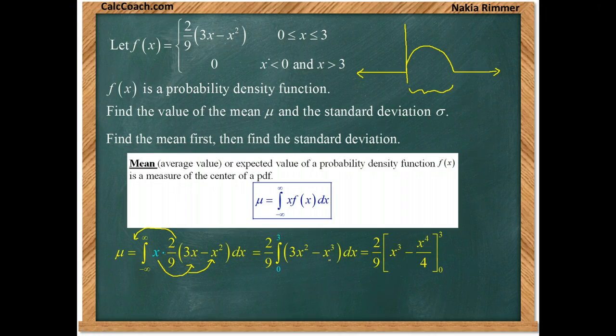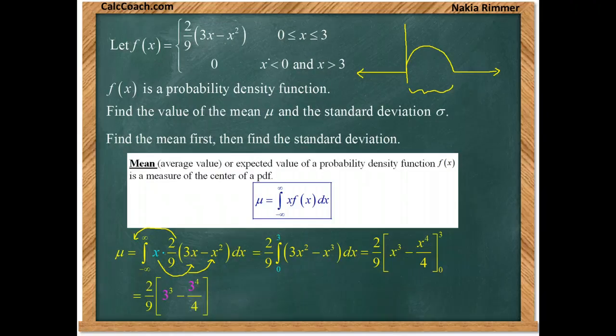When we go from 0 to 3, plugging in 0 gives us 0 so we can really focus our attention on what happens when we plug in a 3. Now one way to help yourself if you don't have a calculator is to factor things out.